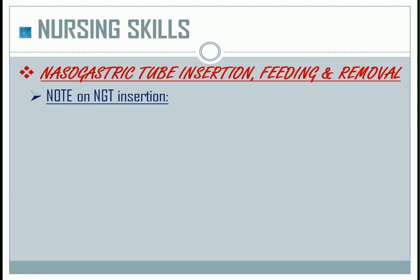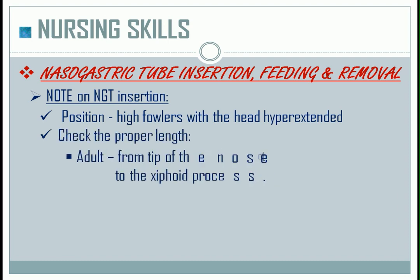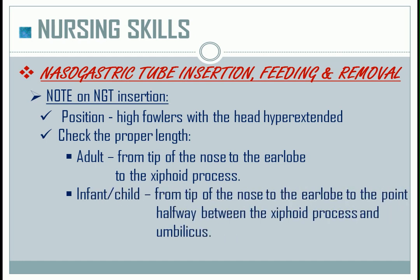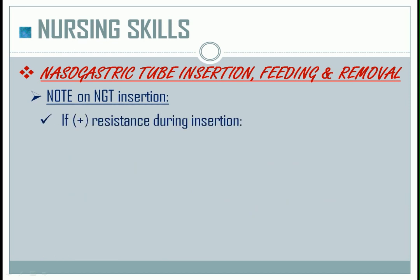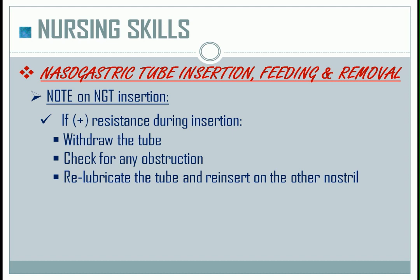Notes on NGT insertion: the position during the procedure is high Fowler's with the head hyperextended. Check the proper length — for adults, it is from the tip of the nose to the earlobe to the xiphoid process. For infants and children, it is from the tip of the nose to the earlobe to the point halfway between the xiphoid process and the umbilicus. Use only a water-based lubricant. If there is resistance during insertion, withdraw the tube, check for obstruction, re-lubricate, and reinsert into the other nostril. If resistance persists, consult the physician.